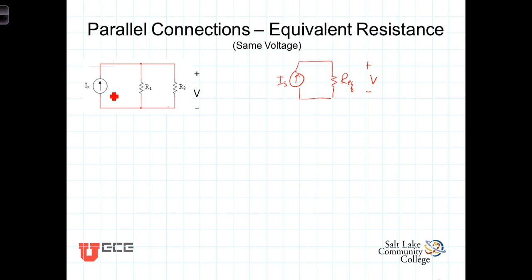Which when connected to the same source current I sub s would produce the same voltage drop across it. In other words, this source here and this source in the equivalent circuit would experience the same voltage and current relationship here as there.